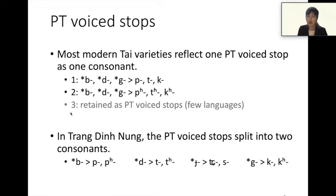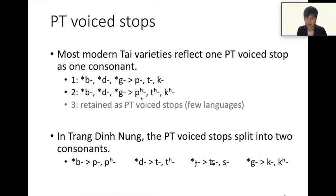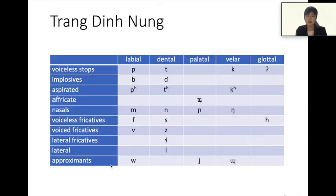For example, prototype *b became ba or pa. In Chanding NUN, however, prototype voiced stops split into two consonants. For example, *b split into ba and pa. This presentation intends to show how these phenomena are related to tone. This table shows the consonants of Chanding NUN. We can see that Chanding NUN also lost prototype voiced stops, like most Thai varieties.